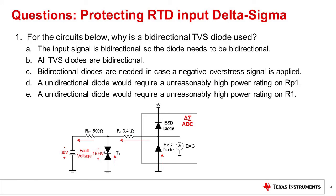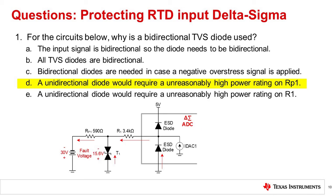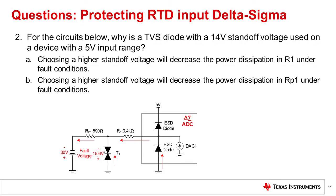Question 1: For the circuits below, why is a bidirectional TVS diode used? The correct answer is D. A unidirectional diode would require an unreasonably high power rating on RP1. If a unipolar TVS was used, there would be a 29.3 volt drop across RP1, creating a very high current through RP1 and dissipating 1.45 watts of power in it. Question 2: For the circuits below, why is a TVS diode with a 14 volt standoff voltage used on a device with a 5 volt input range? The correct answer is B. Choosing a higher standoff voltage will decrease the power dissipation in RP1 under fault conditions. The higher voltage TVS diode will break down at about 15.6 volts, so roughly half of the voltage is across the resistor and half is across the TVS diode.